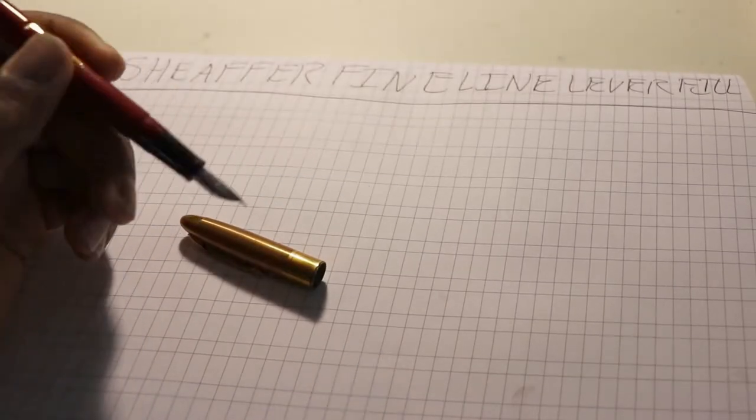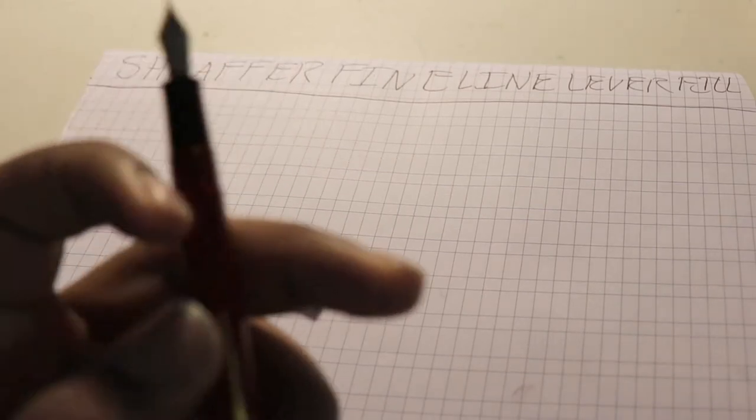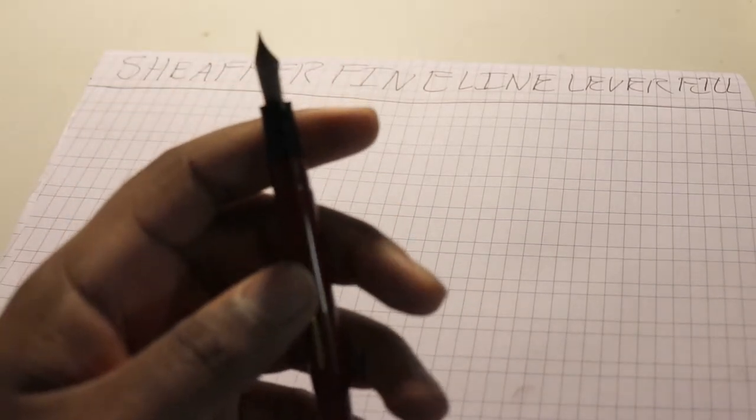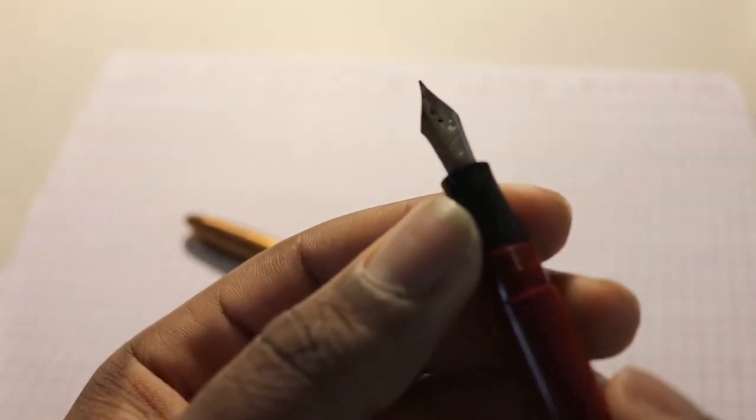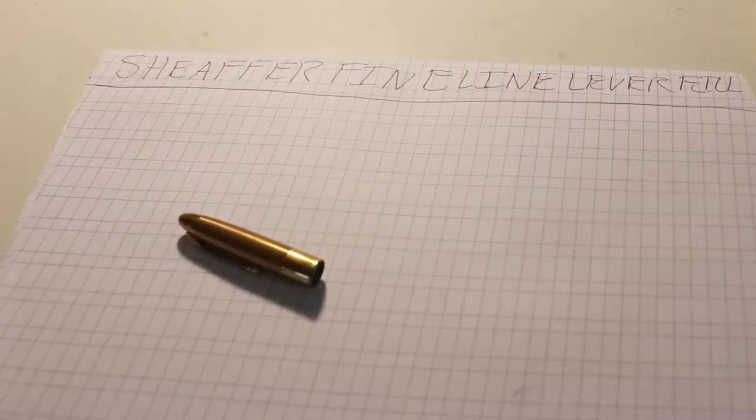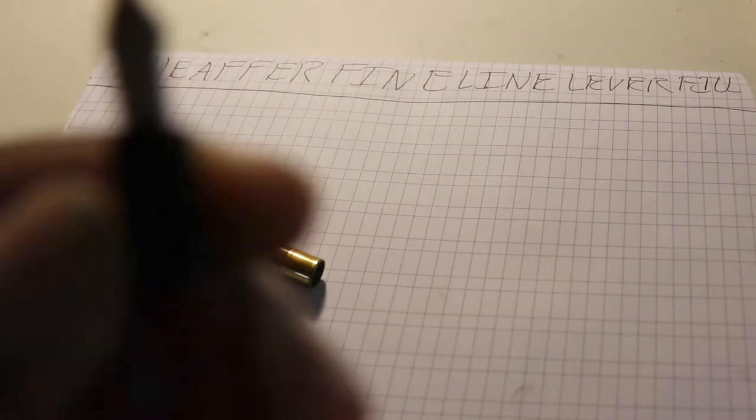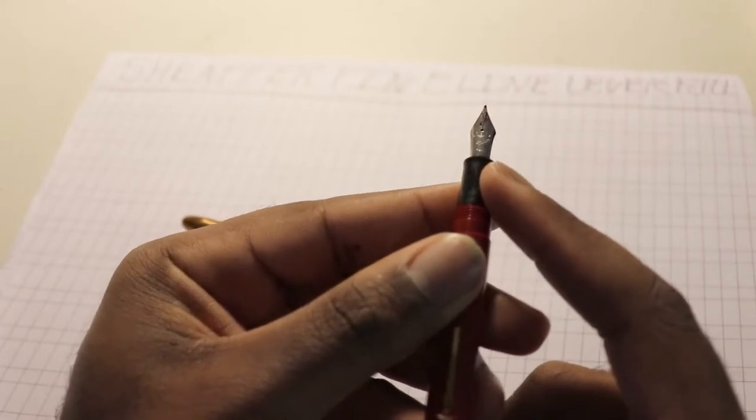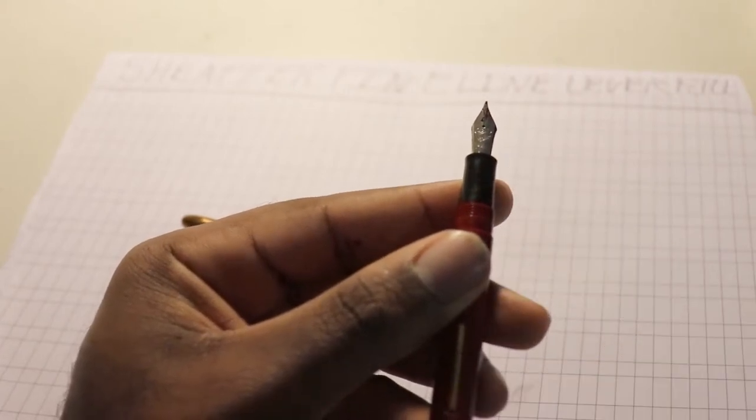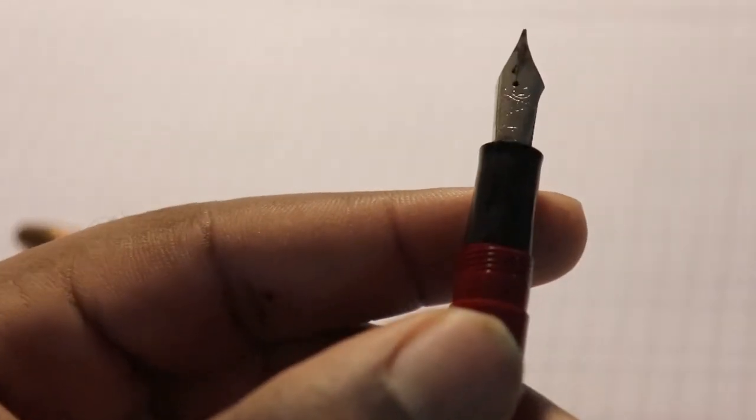The Schaefer Fineline has semi-flex to it, and that's nice. On the nibs of the Schaefer Finelines, I don't know if you can see this, but it says 341. It says 341 on the nib here, and that signifies the nib line width. Let me zoom in for you here.